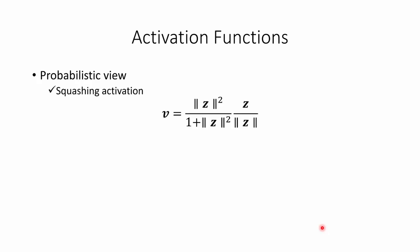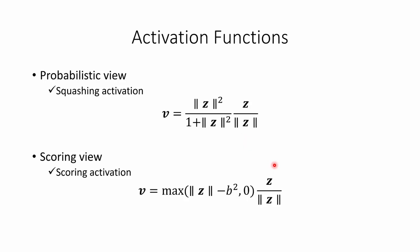We also have two different activation functions. The first is based on the probabilistic view, where we see the norm of the vector as the probability of presence of an entity — in this case we use the squashing activation function, similar to the original capsule network. The other perspective is the scoring view, where we encourage a capsule to have at least a minimum length b to get activated. This threshold b means that if the capsule length is not larger than b, we turn the capsule completely off.